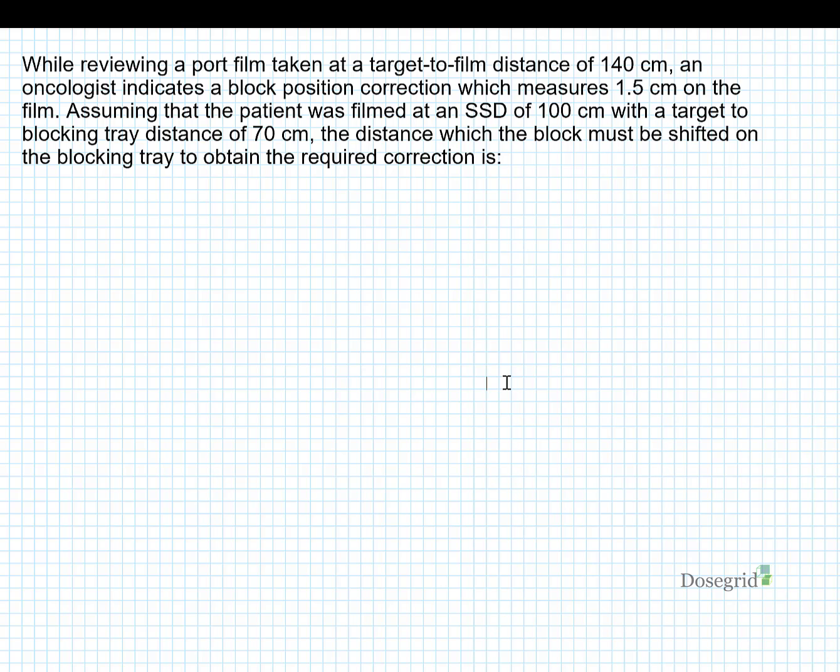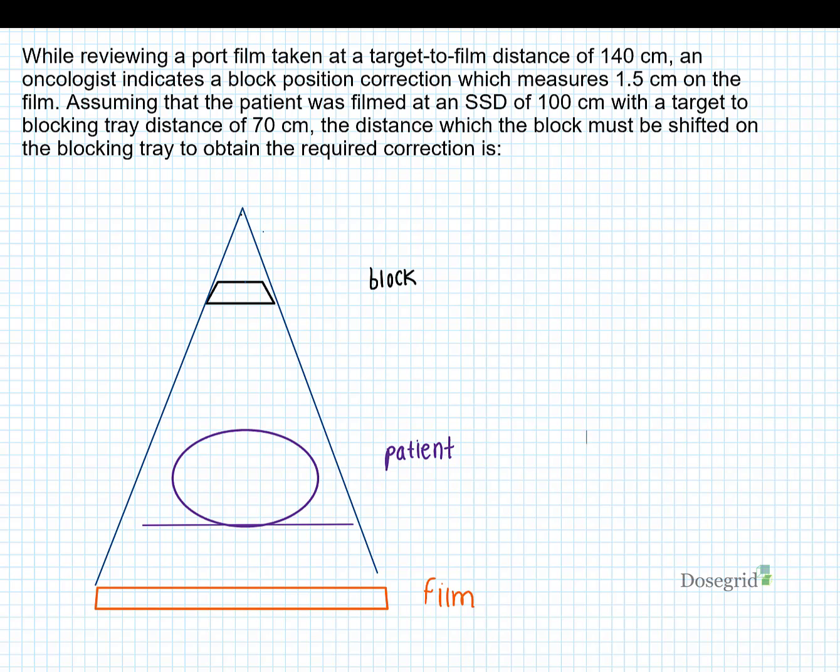I always recommend drawing a picture. The source-to-film distance is 140 cm, the film correction is 1.5 cm, the patient's at 100 cm SSD, and the source-to-blocking tray distance is 70 cm. We want the distance the block should be shifted to reflect that shift on film.